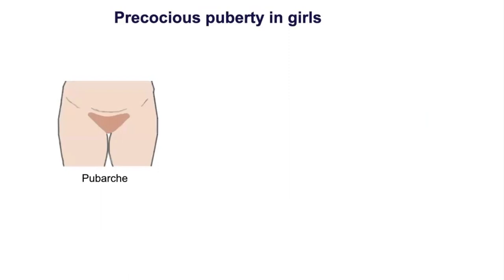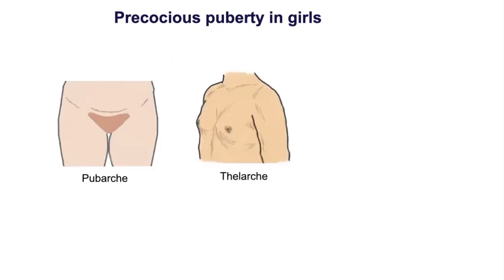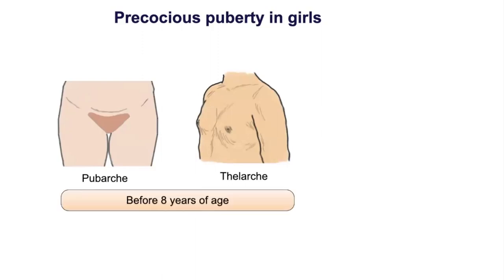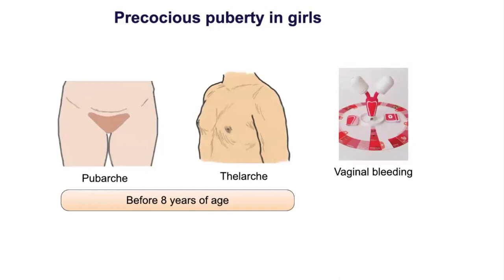Precocious puberty in girls may present as isolated pubic hair without thelarche, suggesting adrenarche due to an adrenal disorder, or isolated thelarche without pubic hair, indicating a hyperestrogenic state. Both pubic hair and thelarche before 8 years is described as precocious puberty, as is vaginal bleeding before 9.5 years.